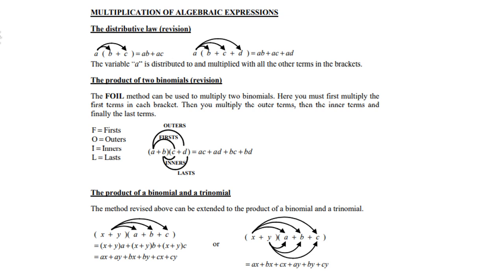Or if there's more than two terms, A times B is AB, A times C is AC, and A times D is AD. So the variable A is then distributed to and multiplied with all the other terms inside the bracket.